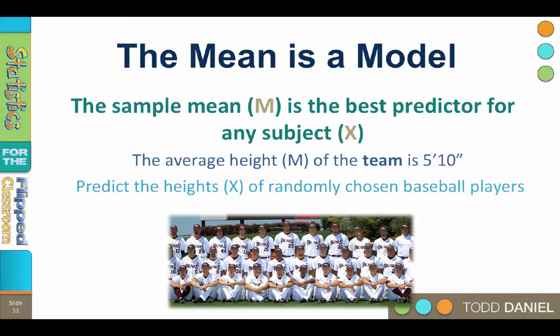I pick a player at random, you guess his height. I pick another player at random, you guess his height. It won't take too long for this game to get old. Because the mean is the best predictor for any individual in the sample, you should always guess 5 foot 10.